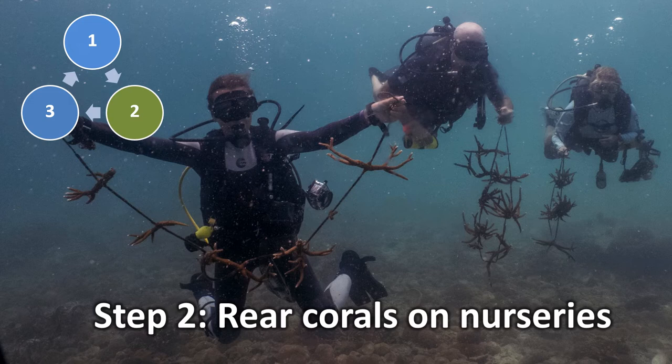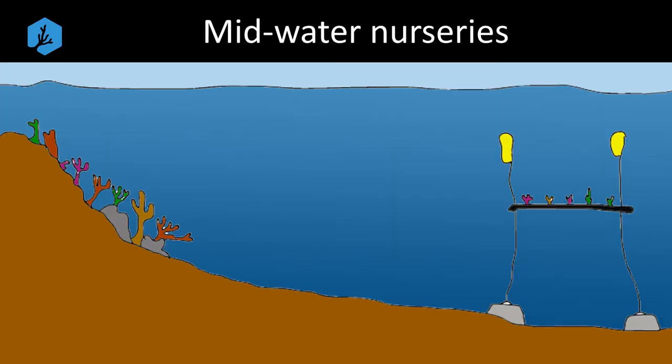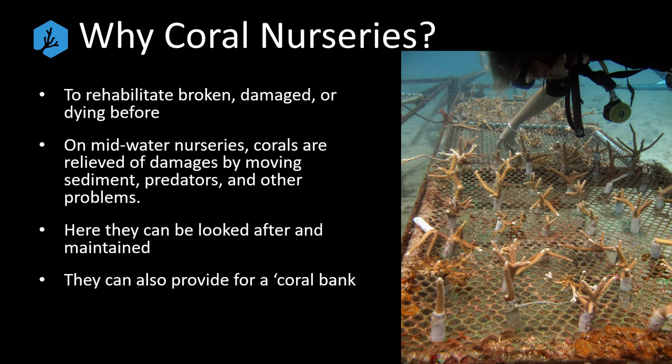Once we have collected coral fragments, it is time to rehabilitate them. This is done using coral nurseries. For community-based programs, this is generally done in the ocean using what are known as mid-water nurseries. These tend to be floating nurseries and are away from the reef area being restored, yet at the same water depth to control for light and temperature levels, as corals tend to become locally adapted to such conditions and should not be moved outside of their normal growing depth range. On the nurseries, the corals can be maintained and looked after. Also, by being moved further from shore, they are generally less stressed by sedimentation, predation, competition, and other reef factors, and will grow much faster and have a lower mortality than those on the natural reef.